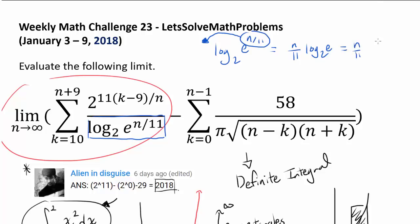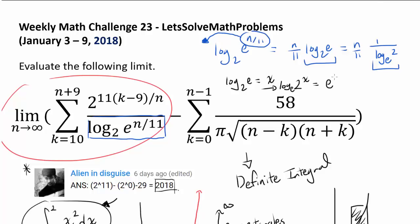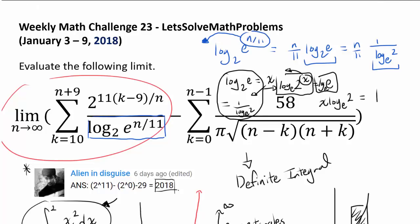Log base 2 of e equals 1 over log base e of 2. Here's a quick proof: let log base 2 of e equal x, so 2 to the x equals e. Taking log base e of both sides: x times log base e of 2 equals log base e of e, which is 1. So x equals 1 over log base e of 2 — confirming these two expressions are the same.